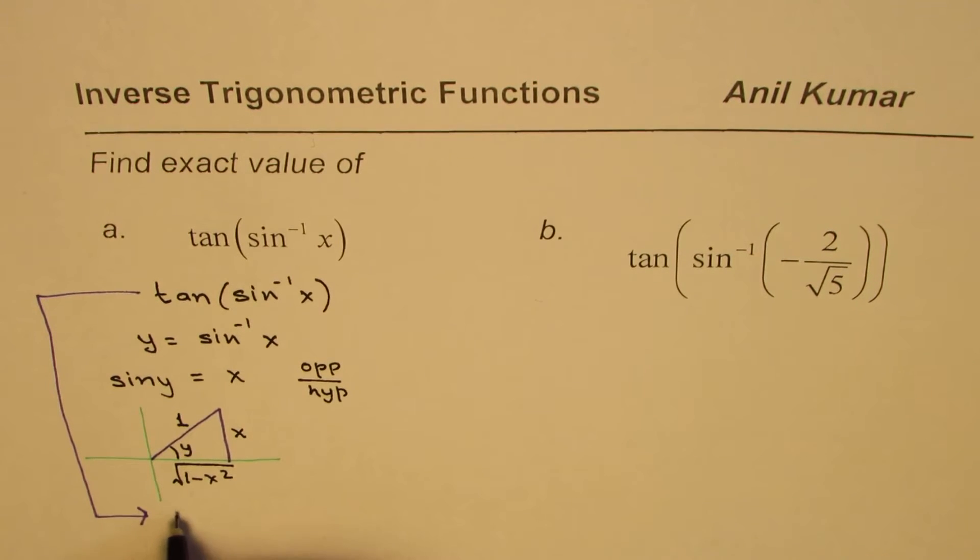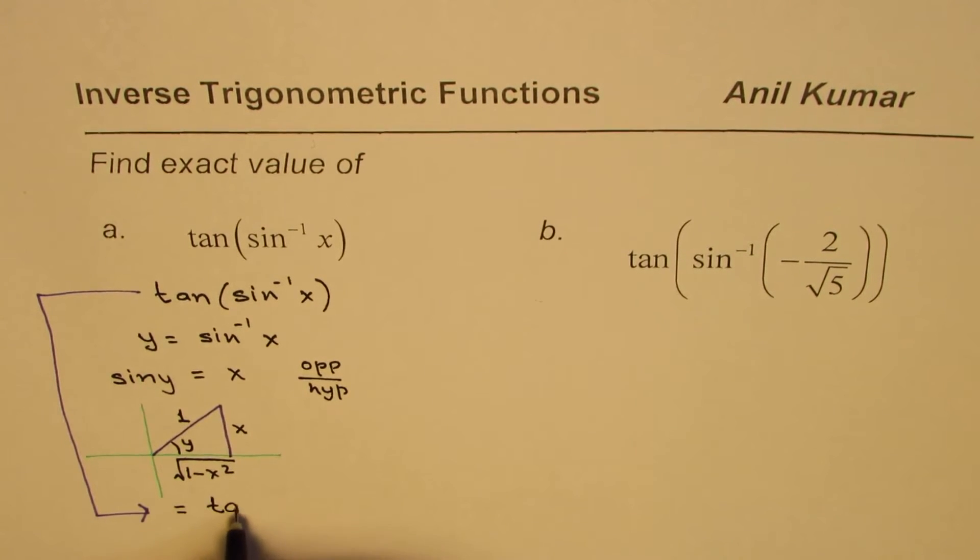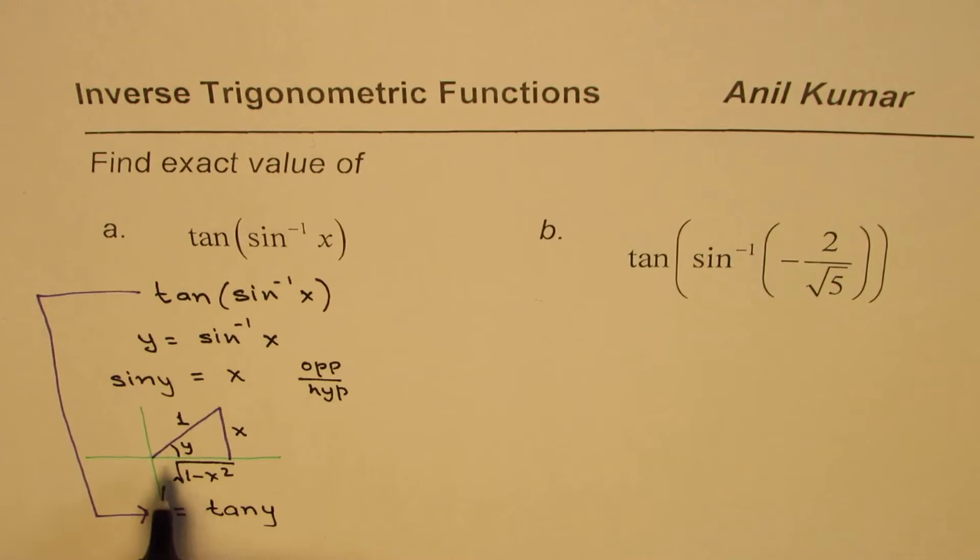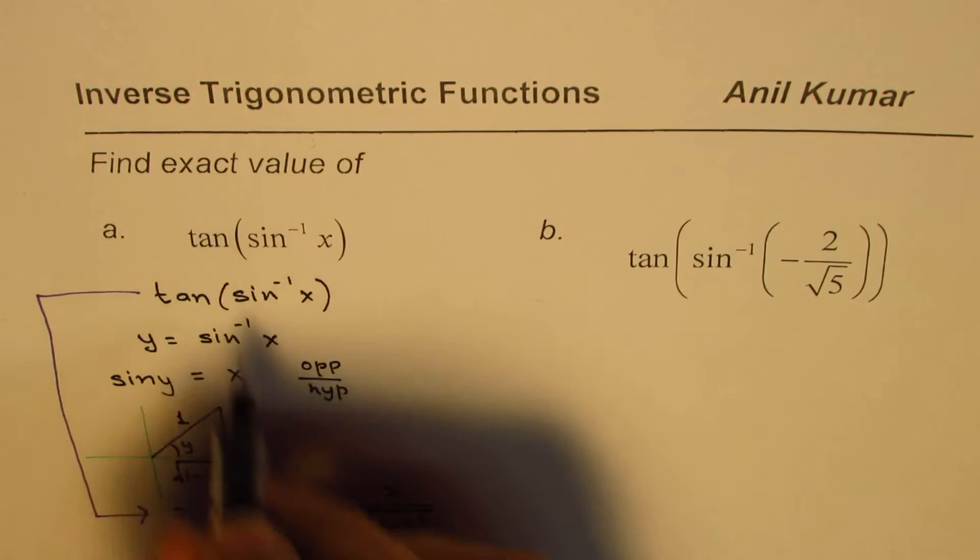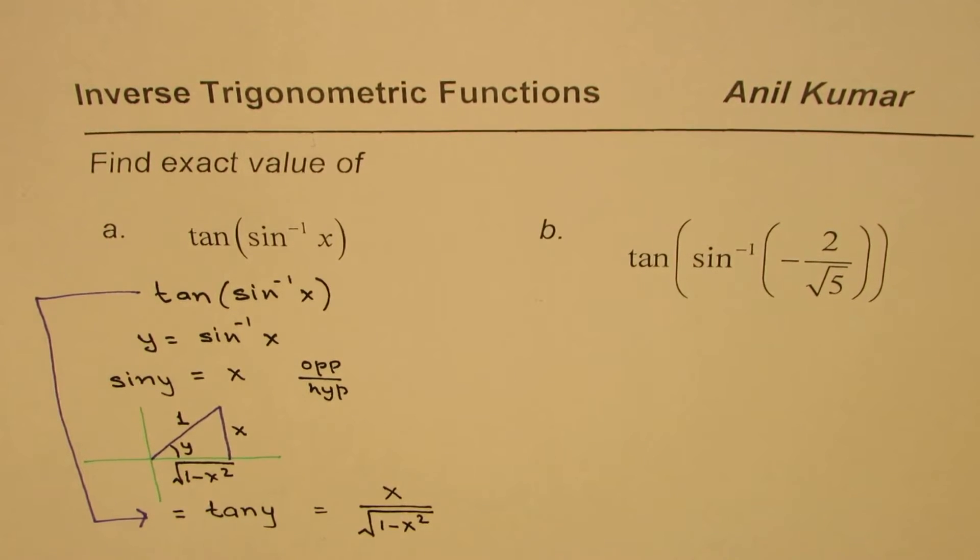And from this figure you can say tan y is opposite over adjacent side, so you could write this as equals to x over square root of 1 minus x square. So that is how you can find the value of the given expression.